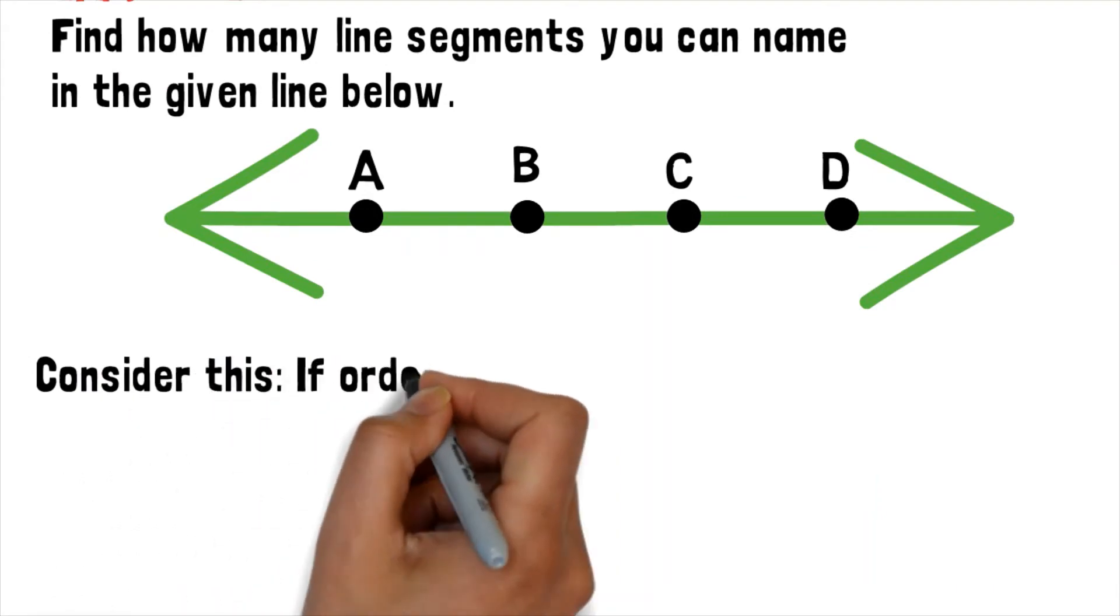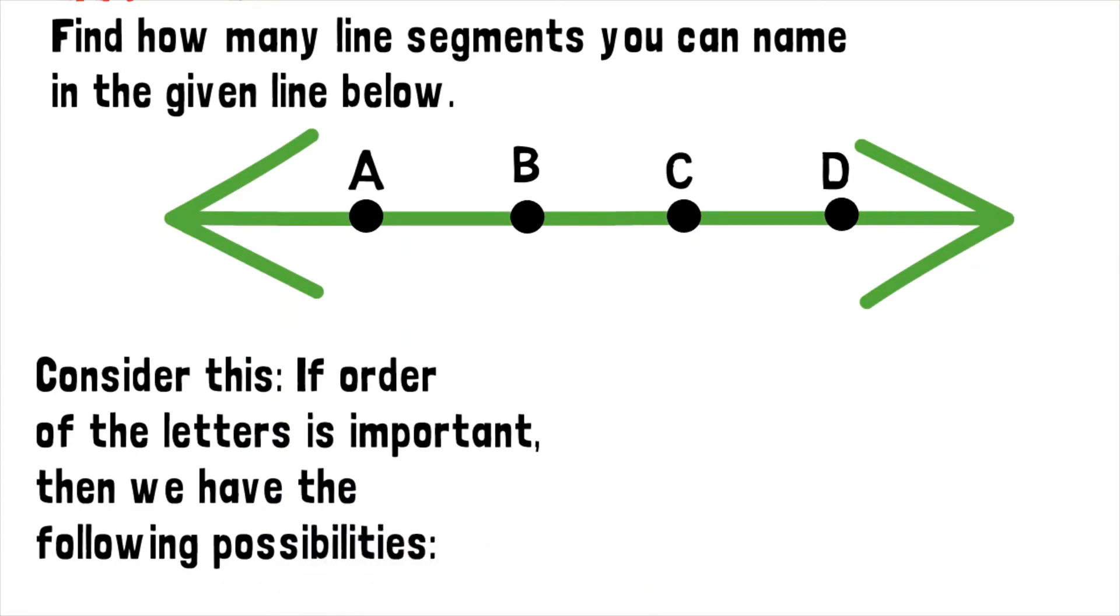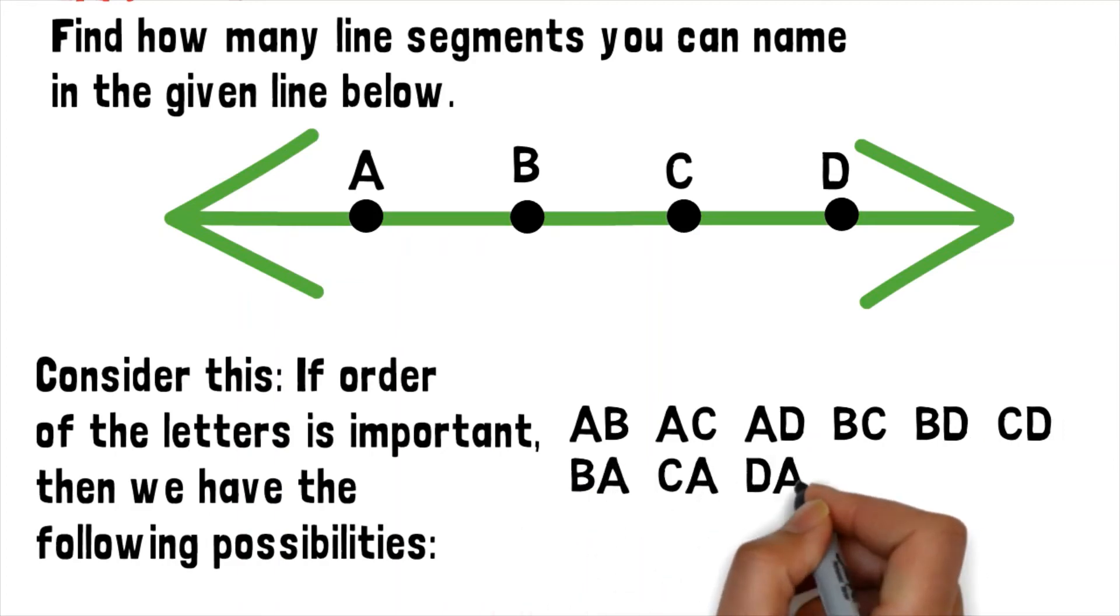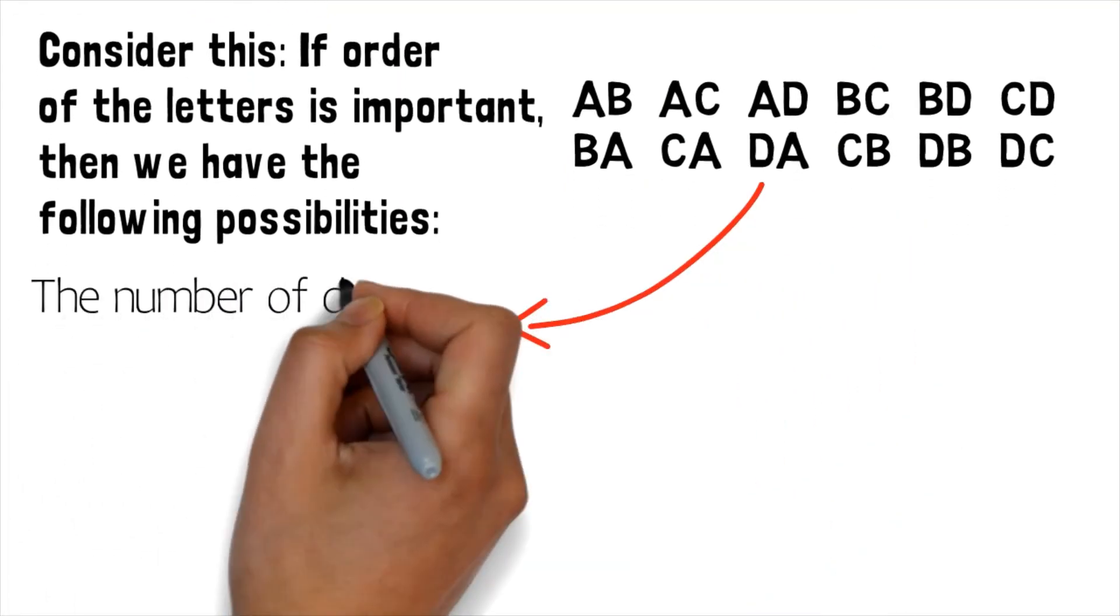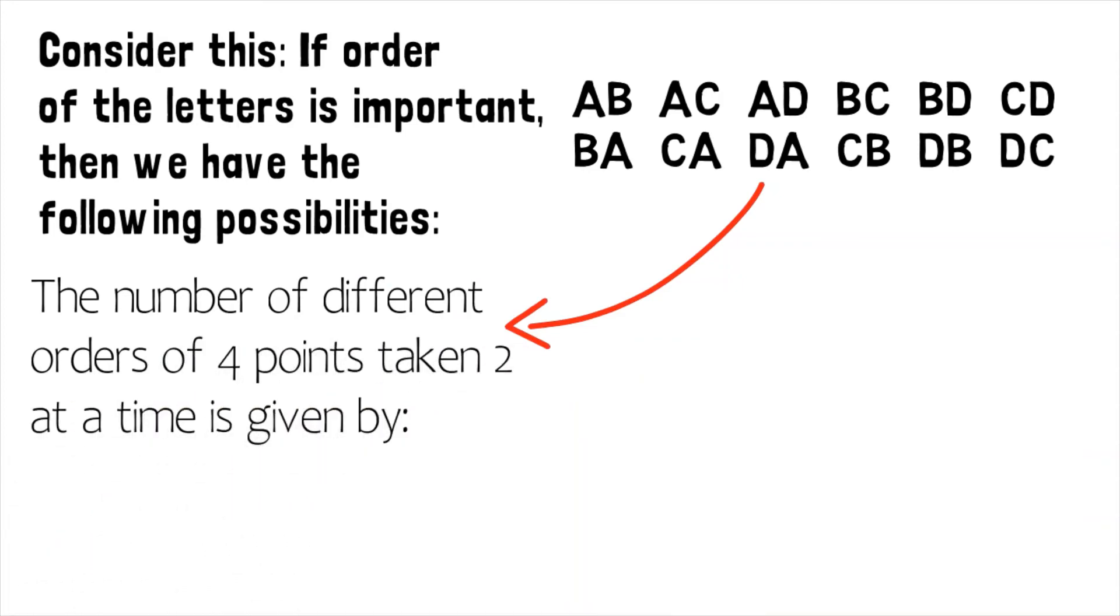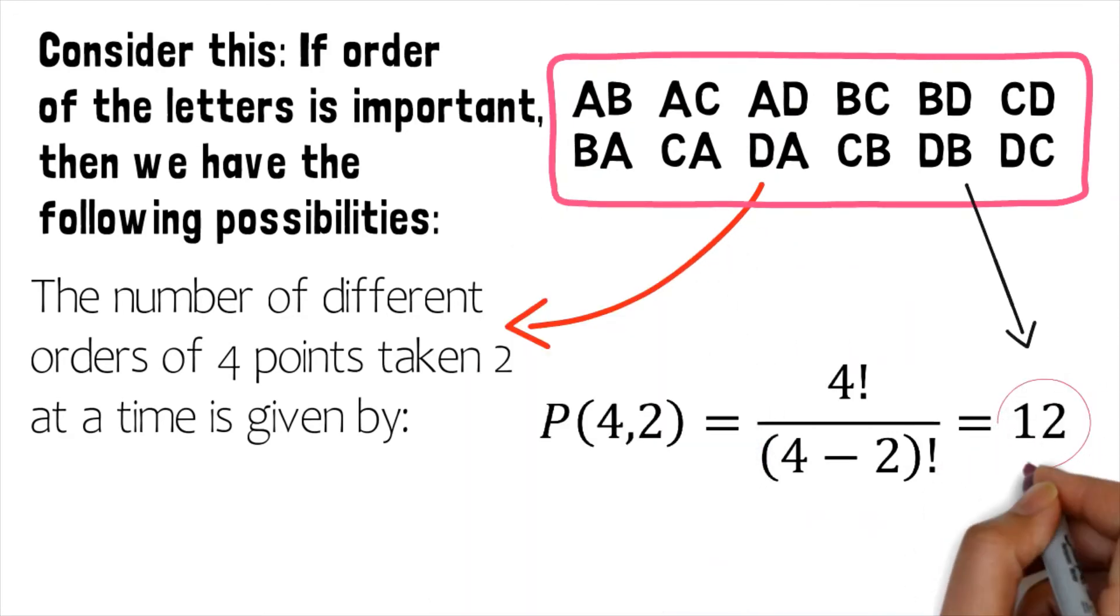Let us consider this. If order of the letters is important, then we have the following possibilities. The number of different orders of 4 points taken 2 at a time is given by P(4,2) equals 4 factorial divided by (4 minus 2) factorial equals 12. So there are 12 possibilities.